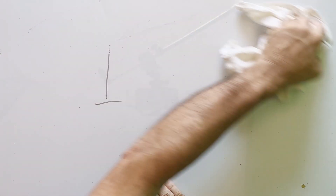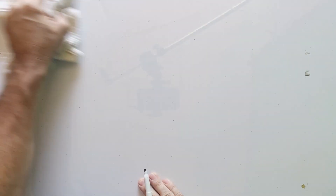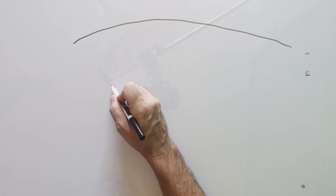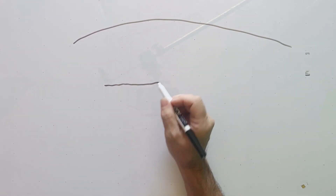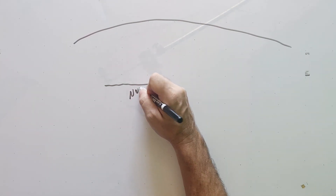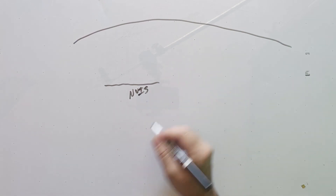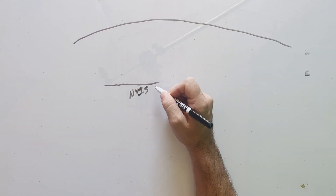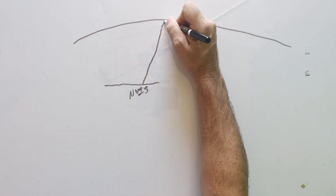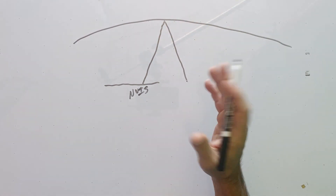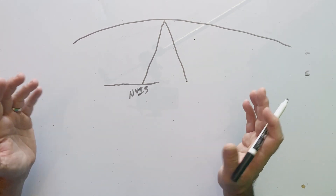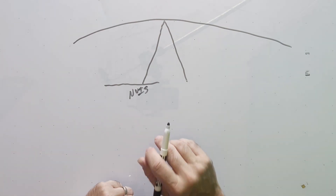Let's contrast that with an NVIS antenna. With an NVIS antenna, it's going to be horizontal and fairly close to the ground. NVIS stands for near vertical incident sky wave. When the radio waves come off of an NVIS antenna, they're going almost straight up and then straight back down. When I say straight up and straight back down, we're talking a radius of about 500, maybe 700 miles, somewhere thereabouts.